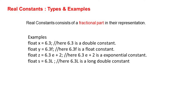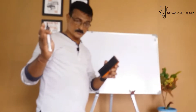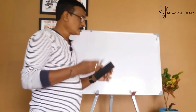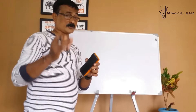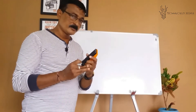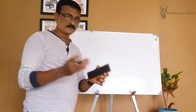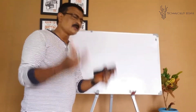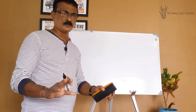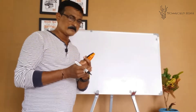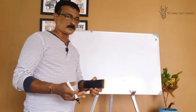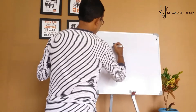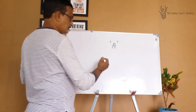Now let's jump into character constants. Under primary constants, characters can be: single character constants, backslash character constants (escape sequences), and multiple character constants also known as strings. Single character constants are always enclosed within single quotes — that is very important.